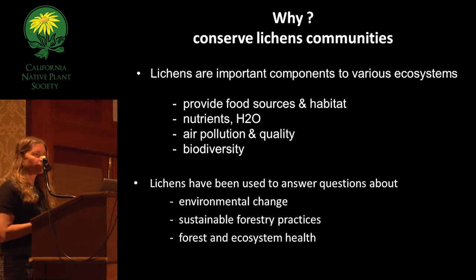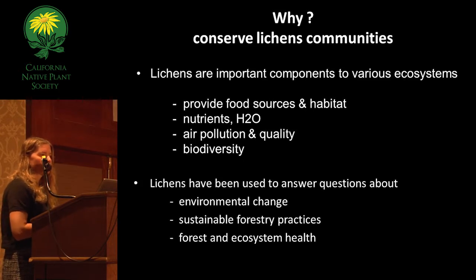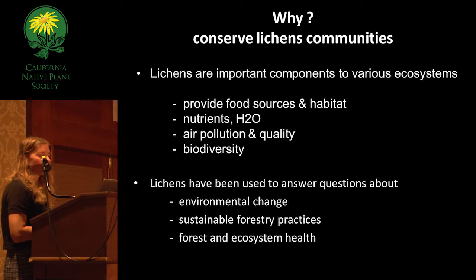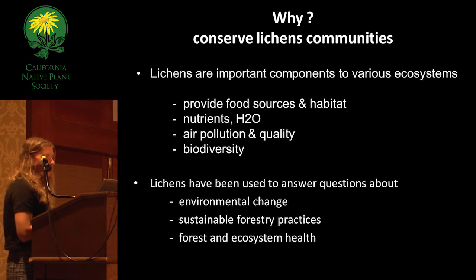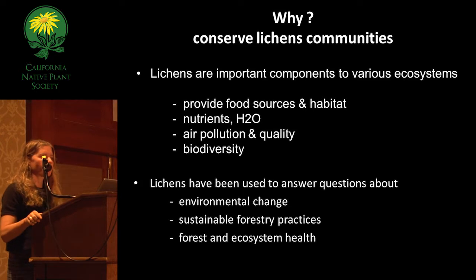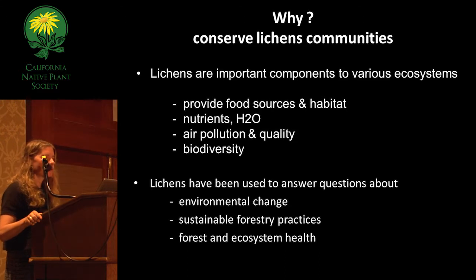Why do we care about lichens beyond their interesting appearance? They are an important component to various ecosystems, providing a food source and habitat for various wildlife and invertebrates. They're also an important nutrient collector, distributor, and redistributor of nutrients and water inside the canopy of a forest and out into the landscape. They're an indicator of air pollution and quality, and also an indicator of biodiversity. Because they can occur in such extreme conditions, they're often more diverse than vascular plants — sometimes ecosystems have only four vascular plant species but over 100 different lichens.